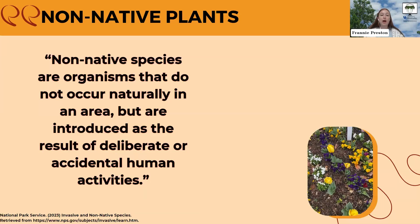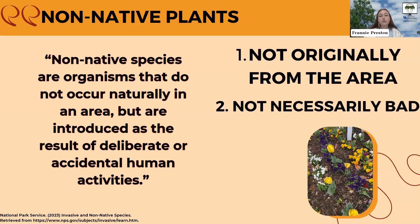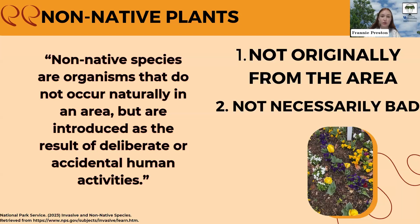The opposite of native plants are non-native plants. Non-native species are organisms that do not occur naturally in an area, but they are introduced as the result of deliberate or accidental human activities. They are not originally from the area, but they're not necessarily bad. I have pictured some tulips and some pansies — both garden species that are not native to Kentucky or the United States — but they look beautiful in our gardens and they're not necessarily causing any harm. They don't have their role in the ecosystem, but they're not causing harm.